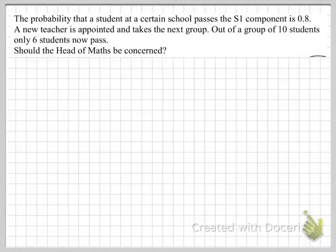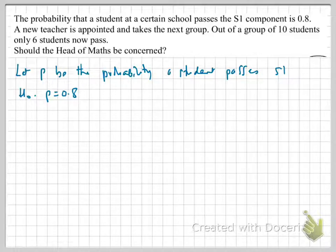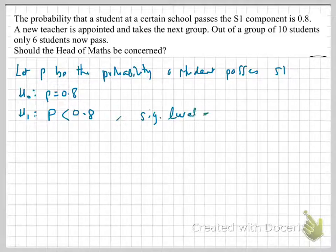Right, again, let's set up our null alternative hypothesis. Let's begin by defining what P is. And let's say P is the probability a student passes an S1 exam. So, let P be the probability a student passes an S1. Our null hypothesis is simply that P equals 0.8. That's the status quo. That's what's expected. Our alternative hypothesis is what challenges that. And from the data, it seems that it's actually gone below 0.8. We'll set the significance level to be 5% since it's not explicitly given. And so that means we'll look at the left end tail of the binomial distribution.